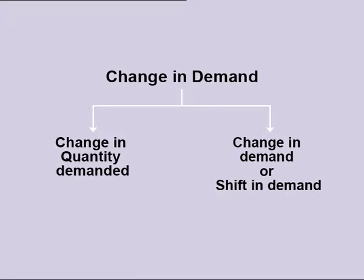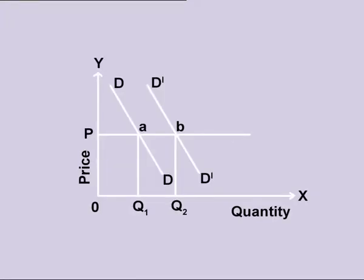Change in Demand. Keeping price constant, when demand changes due to other variables — that is, income, taste and preference, etc. — it is termed as change in demand. Here, at the same price, due to a change in any of the five factors, the demand too changes and one can see that the whole demand curve shifts either towards the left or the right. A leftward shift is termed as decrease in demand and a rightward shift as increase in demand.